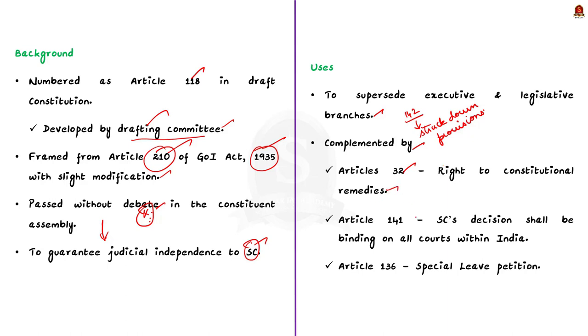Through Article 32, citizens can seek enforcement of rights either in the Supreme Court or High Court. So for enforcement of rights, the Supreme Court through Article 142 can provide complete justice.